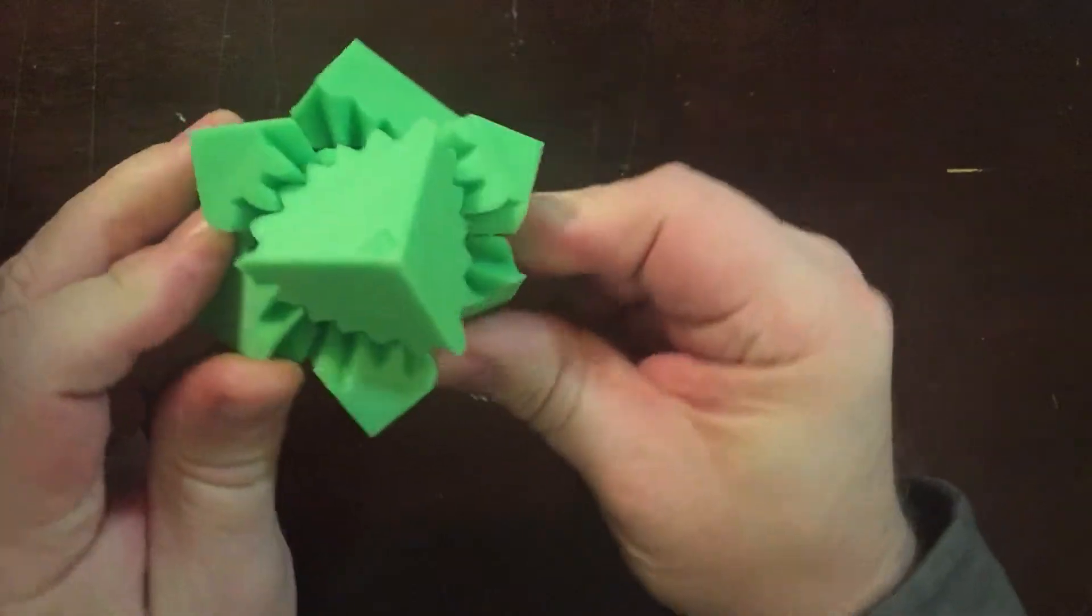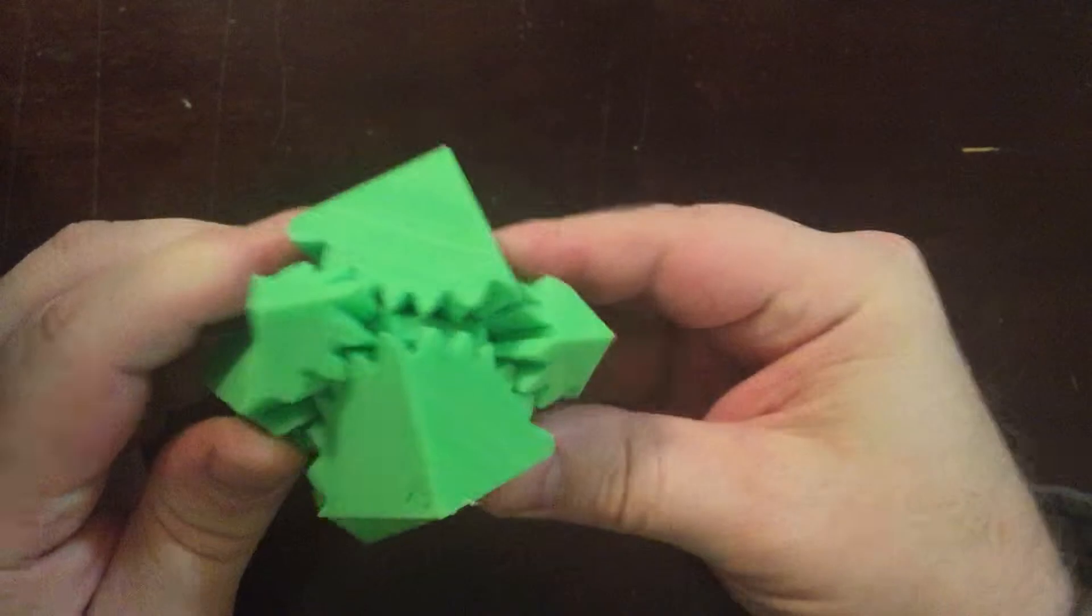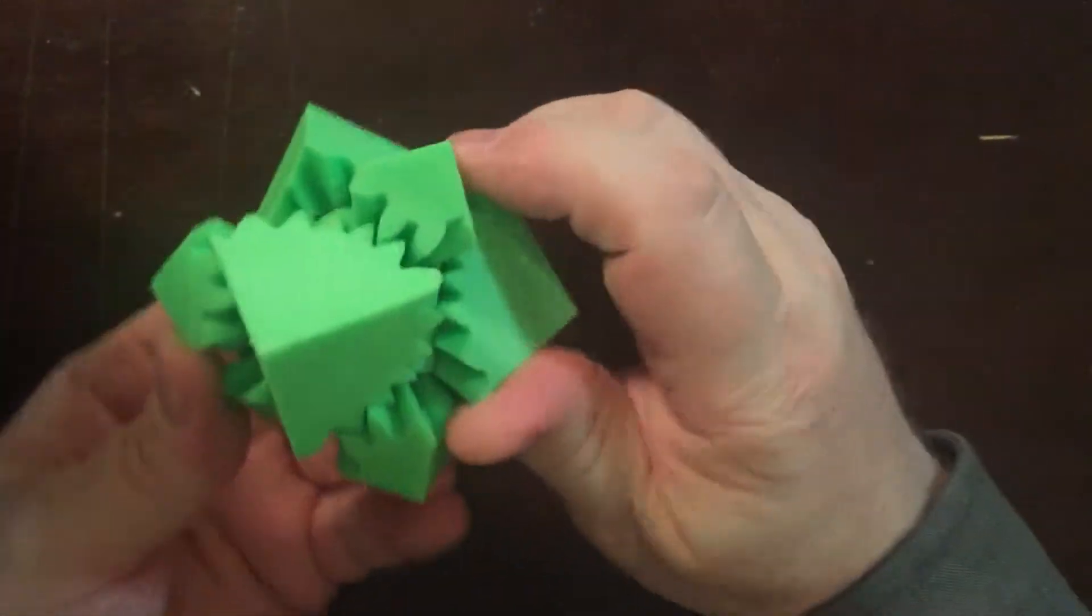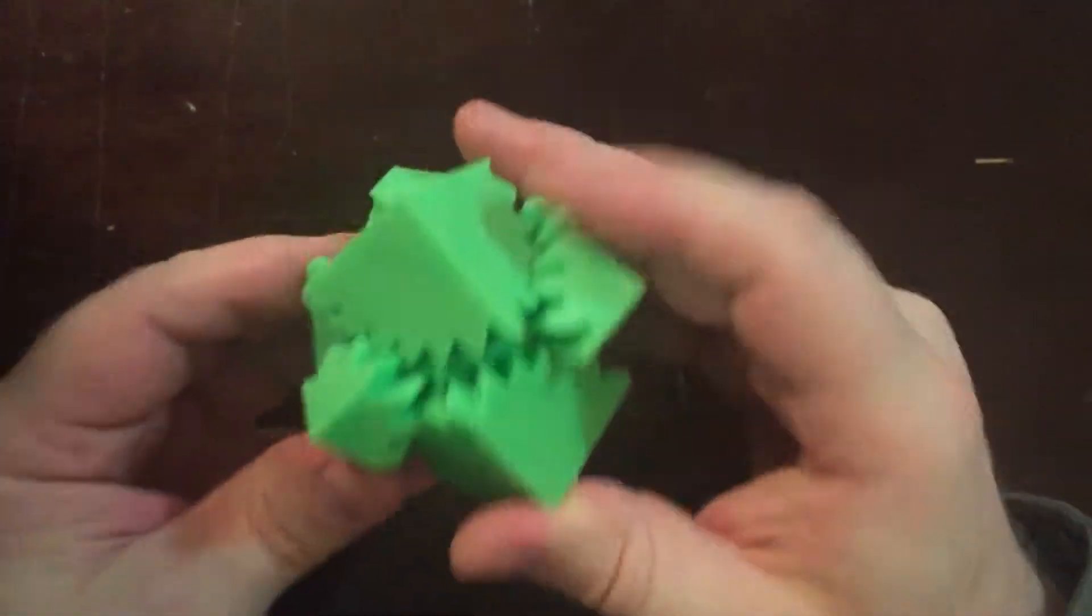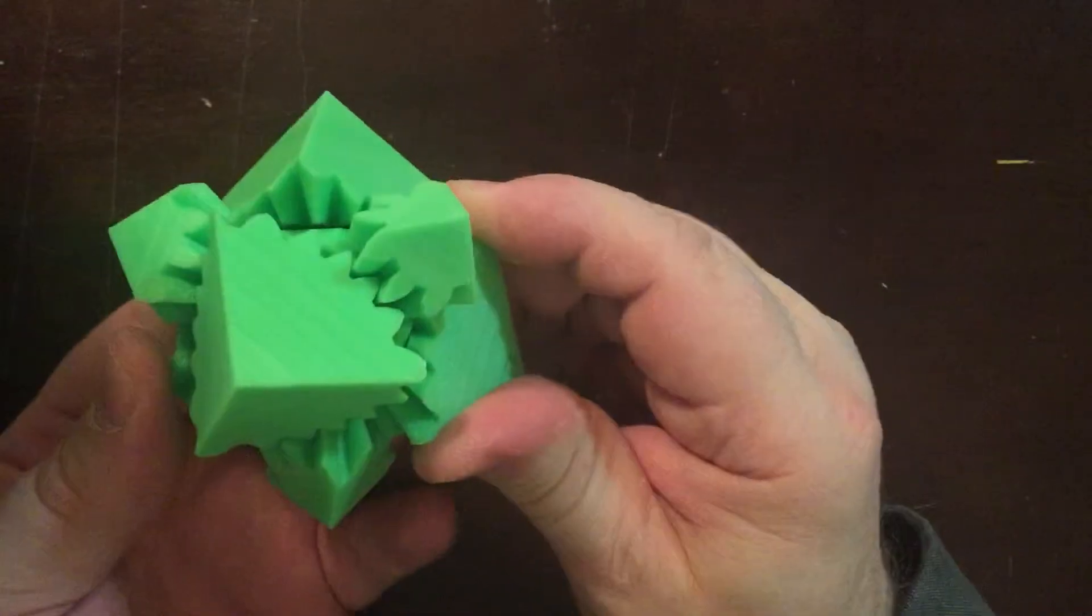When your gear is new it's going to be tight, stiff, because you have little pieces of plastic in the way. They have to get knocked off by basically moving the gear and using it. If it's too tight, put a little grease on it.